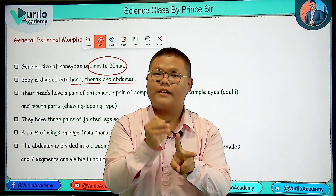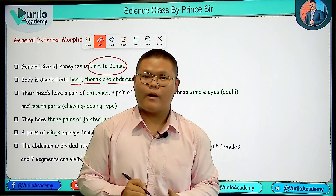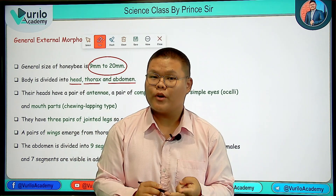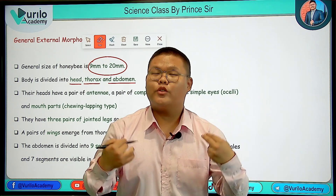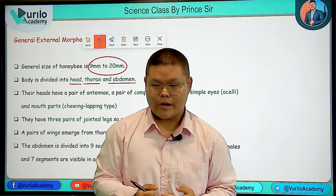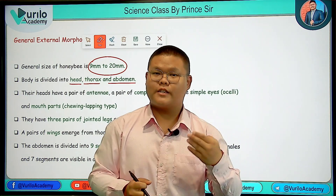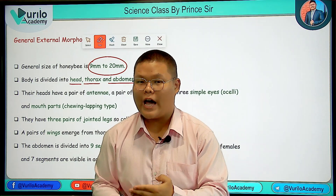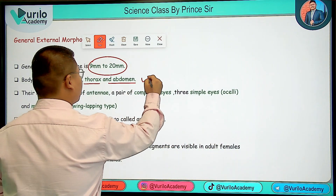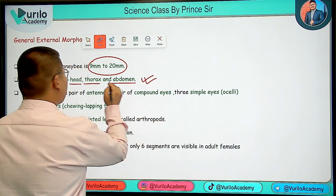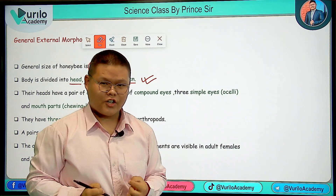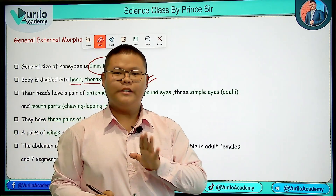The body division type consists of head, thorax, and abdomen. The other type of body division is a fused body called cephalothorax and abdomen. So this is Type 1 body division where head, thorax, and abdomen are found.